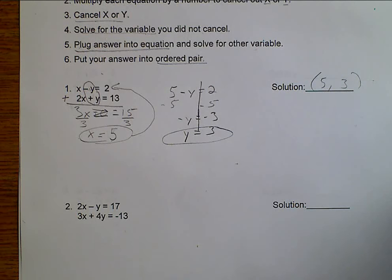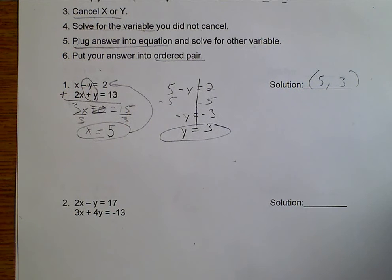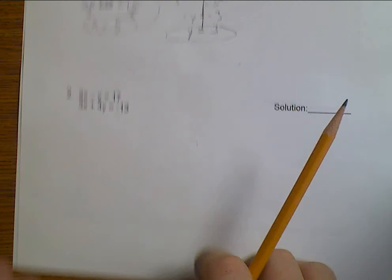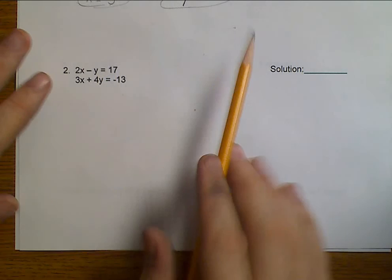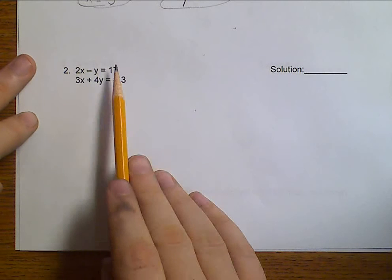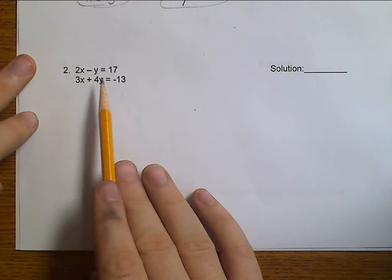So, solving by elimination sometimes is not very hard at all. These were already ready to be solved for. Let's go ahead and look at problem number 2. Well, are they in standard form? X, Y, number. X, Y equals number. Yes, they are.